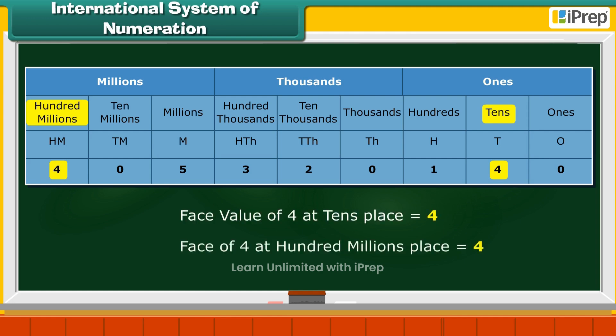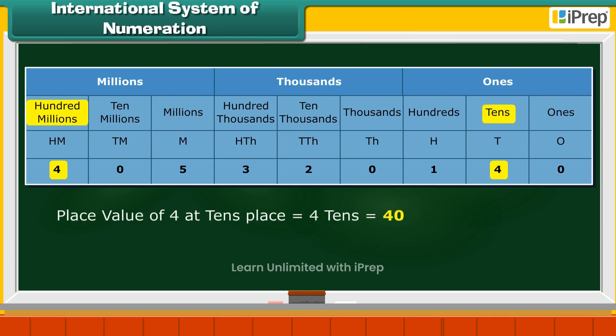The face value of digit 4 is 4 at both places. But the place value of 4 at the tens place is 4 tens, that is 40, and at the hundred millions place is 400 millions.